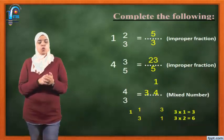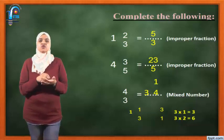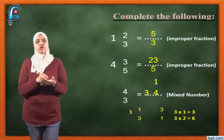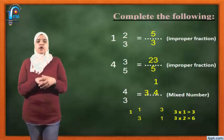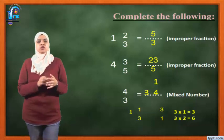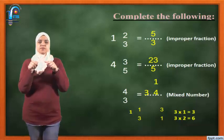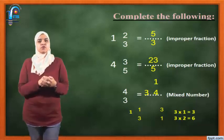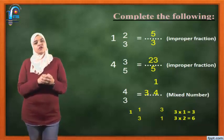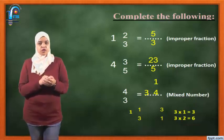Complete the following: 1 and 2 over 3 equals what? I want to write this fraction as an improper fraction. How? 1 times 3 — make the whole number times the denominator. 1 times 3 equals 3. Then 3 plus 2 — the answer plus the numerator. 3 plus 2 equals 5. So 5 over 3. I won't change the denominator, so the answer will be 5 over 3.